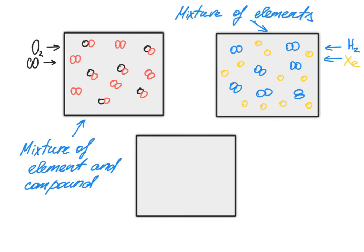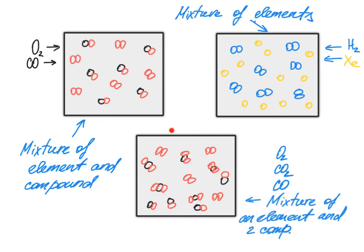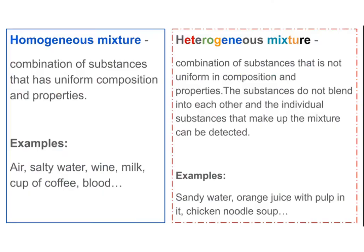This last box will be a mixture of an element and two compounds. Let's mix oxygen, carbon dioxide, and carbon monoxide. Here you can see my element mixed with carbon dioxide, a compound, and carbon monoxide, another compound. So inside this box I have a mixture of an element and two compounds.